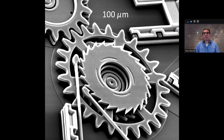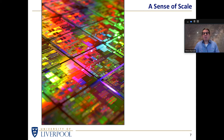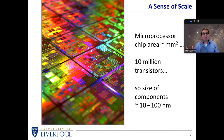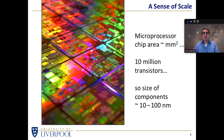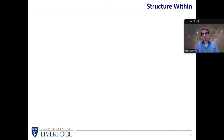Of course, that's not the smallest thing we can make. We can make computer chips, and on an area of order square millimeters there might be millions or tens of millions of transistors — individual components in a typical computer chip might be of order ten nanometers upwards. In terms of manufacturing, we're getting to the point where we have to worry about what the world is made of, and to what extent we can keep making a piece of silicon smaller and smaller.